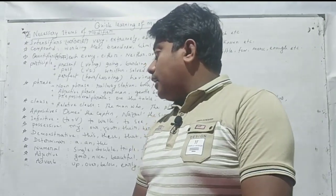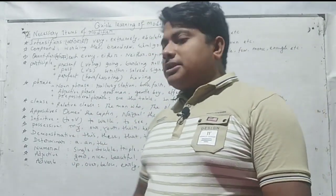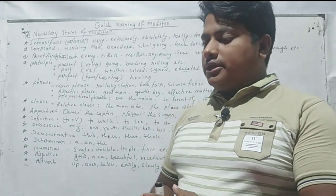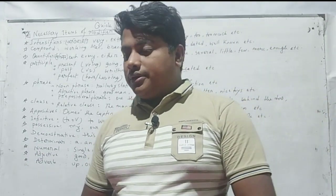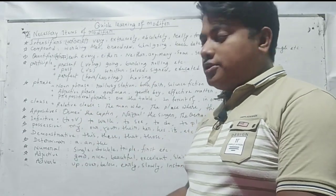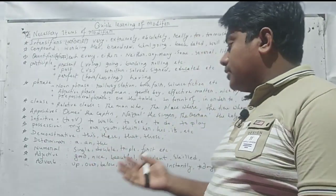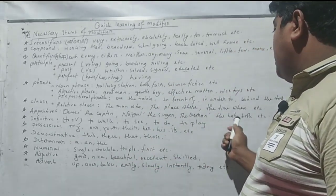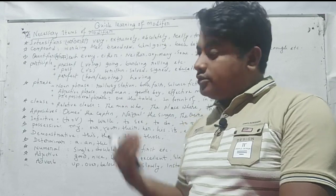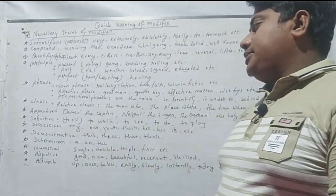Now, appositions. An appositive consists of two nouns where one gives additional information about the other. For example: 'Asman, the captain' — here 'the captain' gives extra information about Asman. Another example: 'Nose Rule, the singer' — the singer is the name expressed. Also: 'the Koran, the holy book' — this expresses extra additional information about the Koran. Appositions express titles and additional descriptive information.